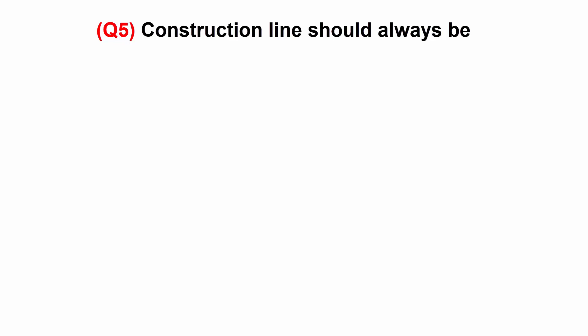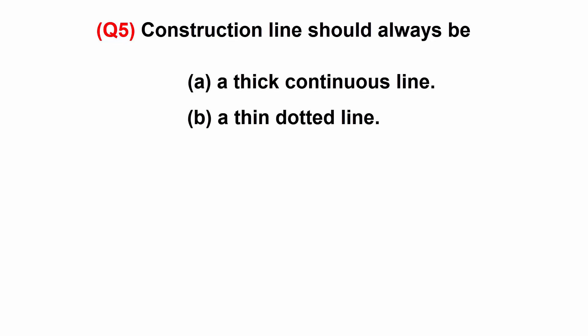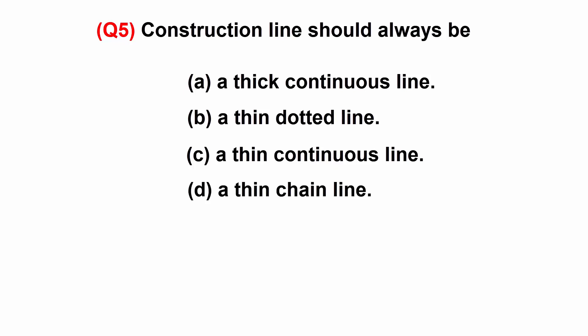Construction line should always be: A: a thick continuous line. B: a thin dotted line. C: a thin continuous line. D: a thin chain line.